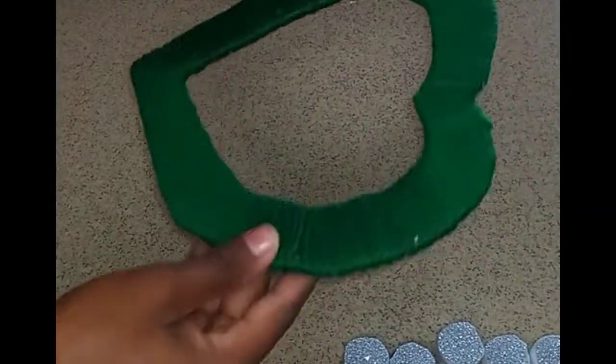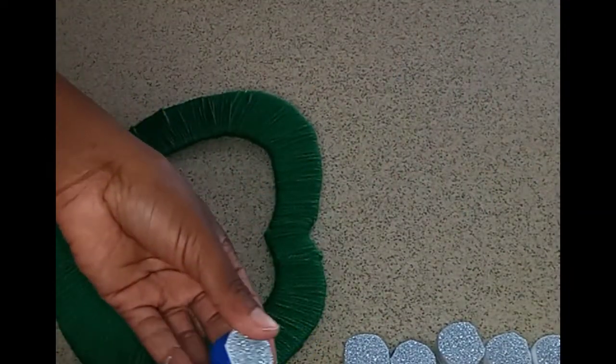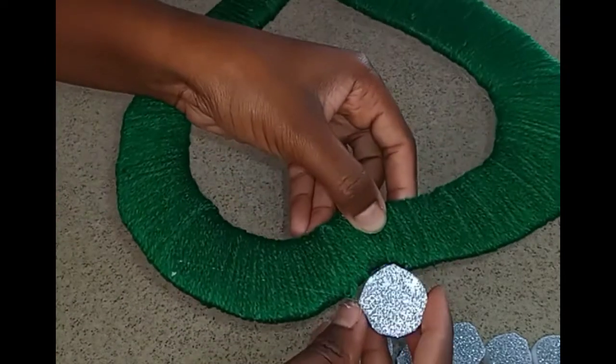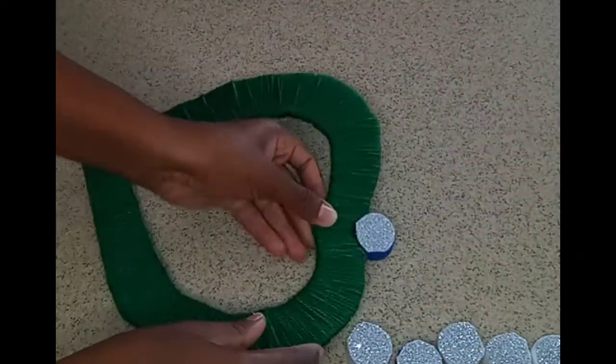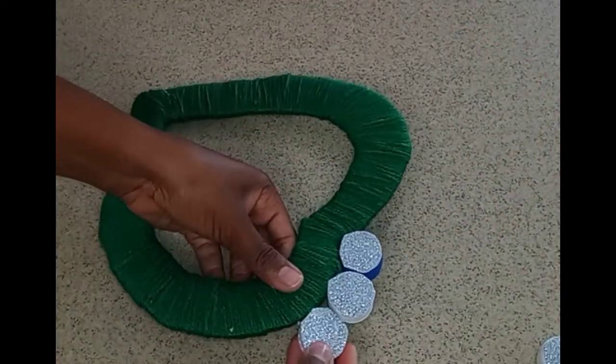Then you're just going to use your glue gun to secure that to your cardboard. Just start in the center and glue all your corks going all the way around your heart.